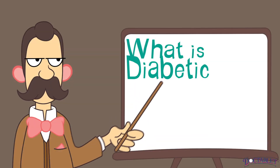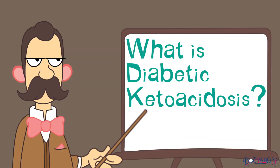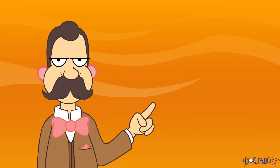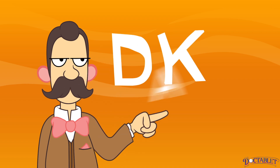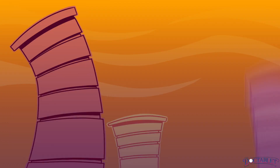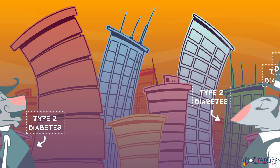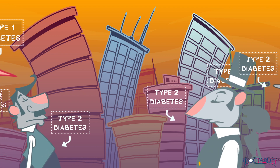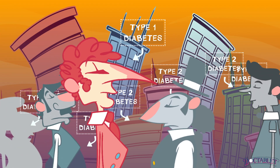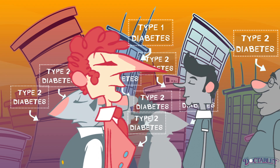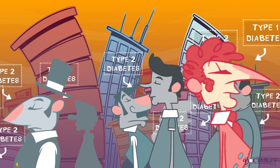What is diabetic ketoacidosis? Diabetic ketoacidosis is a mouthful, which is why you'll often hear it referred to as DKA for short. DKA is an uncommon but serious complication of uncontrolled diabetes, seen more frequently in people with type 1 diabetes, an autoimmune condition characterized by the absolute lack of insulin production.